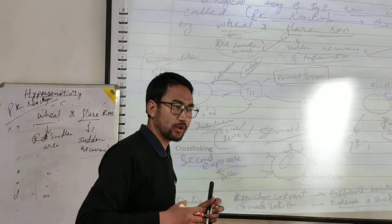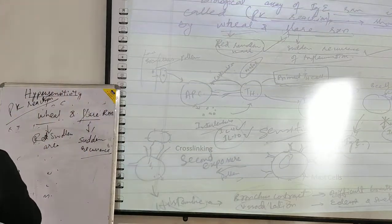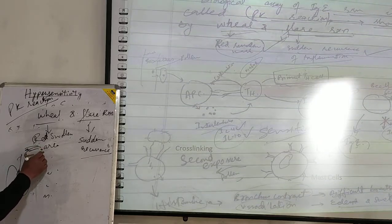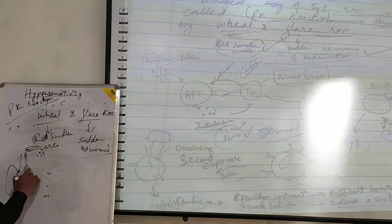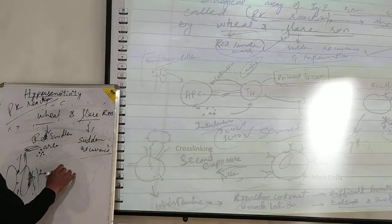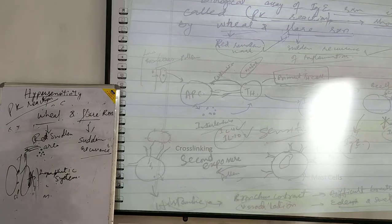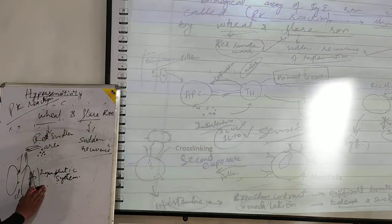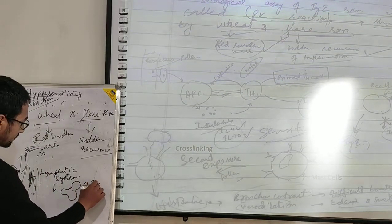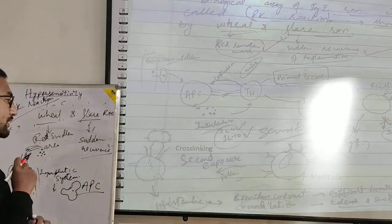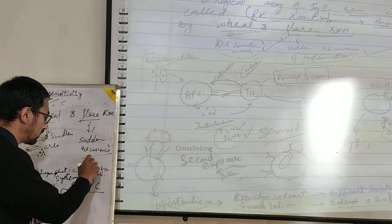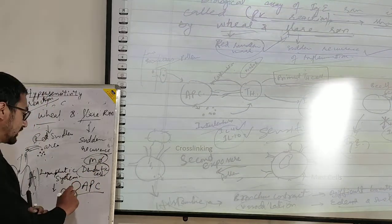What is the immunological mechanism behind Type 1 hypersensitivity? Say for example a person inhales pollen grains from outside. The pollen gets carried into the lymphatic system. The lymphatic system has cells called antigen presenting cells, or APCs. These antigen presenting cells can either be dendritic cells or macrophages.